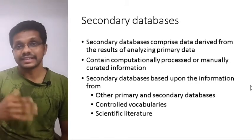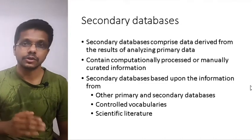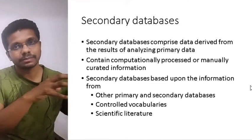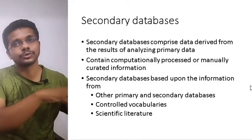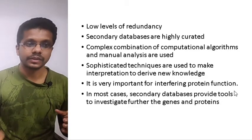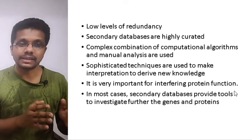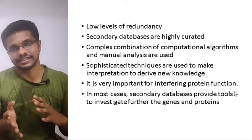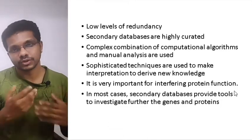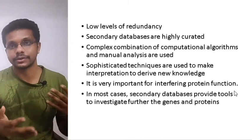Secondary databases get their information either from other primary or secondary databases, controlled vocabularies, or scientific literature. So data from primary databases can be used to generate data in secondary databases. When compared to primary databases, secondary databases have low redundancy — the repetition of data is less — and most secondary databases are highly curated, mostly through manual curation.